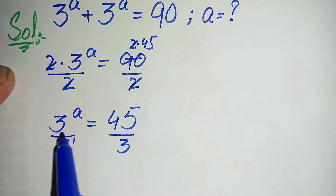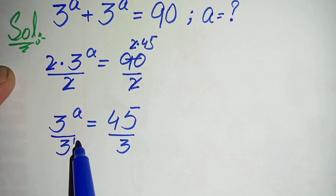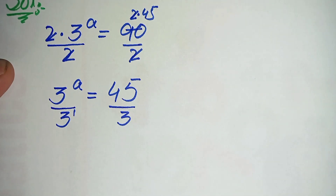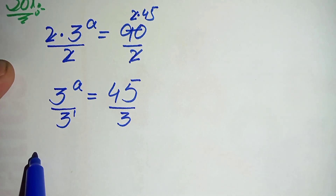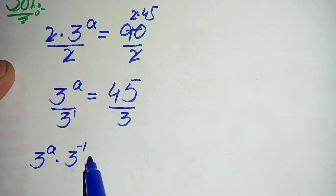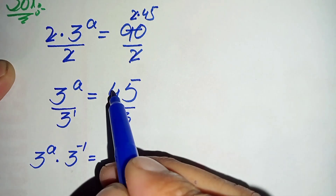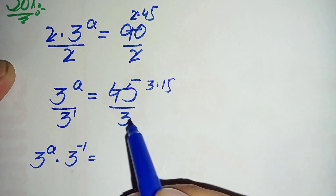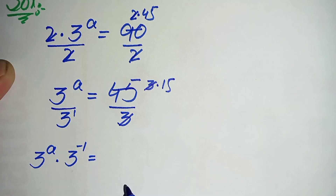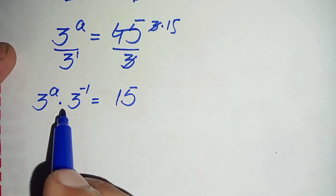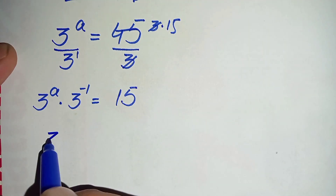The power of this 3 is 1, so we move 3 to the power 1 to the numerator and the sign of its power will change. This becomes 3 to the power a times 3 to the power minus 1 equals 45, and we write 45 as 3 times 15, canceling the 3's to leave 15 on the right. Since the bases are the same on the left, we add the powers, giving 3 to the power (a minus 1) is equal to 15.